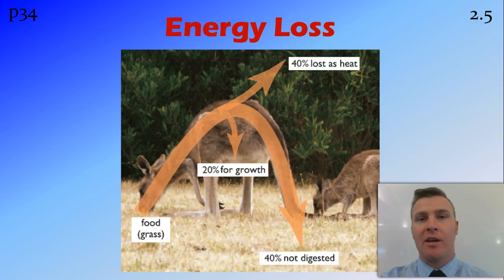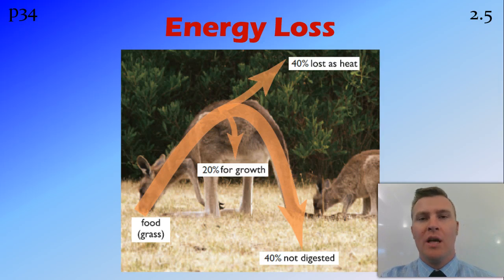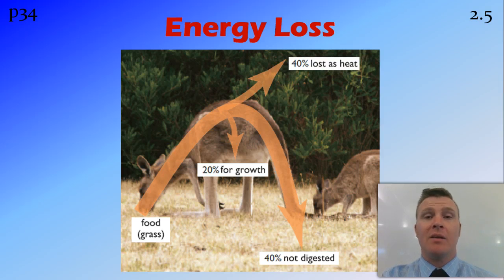I mentioned energy loss between trophic levels earlier. Not all of the energy consumed by an animal goes into that animal growing — in fact, only a very small percentage goes into actual growth. Other portions of the energy are used for heating the animal, for movement, and some of it isn't digested at all and goes straight through the digestive system. In this example, 20% of the food that comes in is for growth; in other animals it's closer to 10%, so a lot of energy is lost from one trophic level to the next.